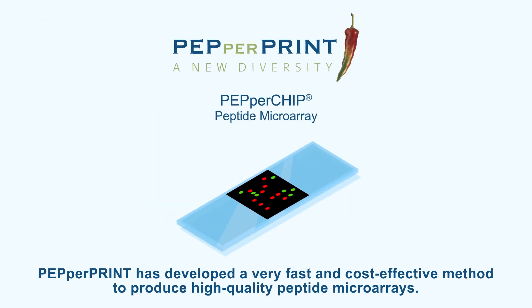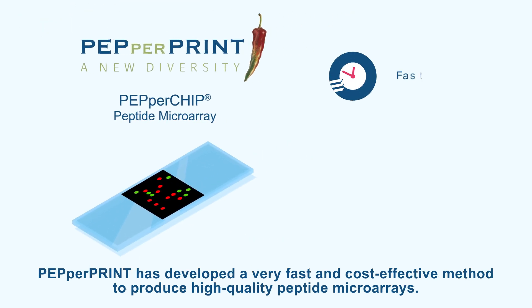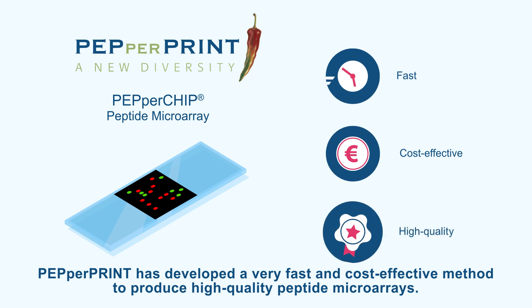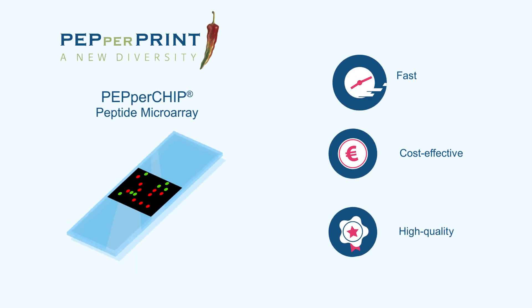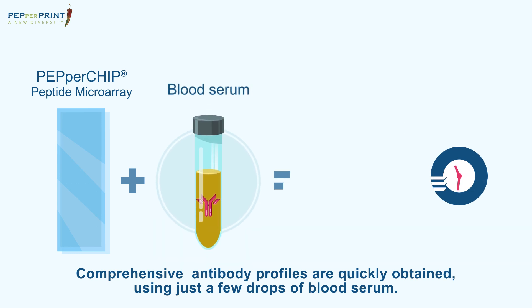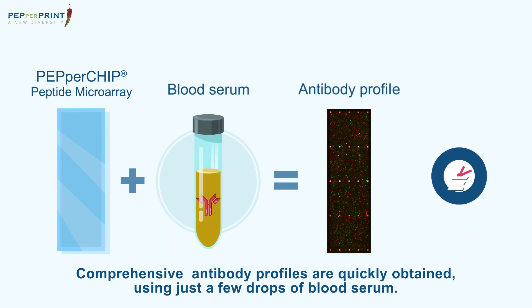Pepperprint has developed a very fast and cost-effective method to produce high quality peptide microarrays. Comprehensive antibody profiles are quickly obtained using just a few drops of blood serum.